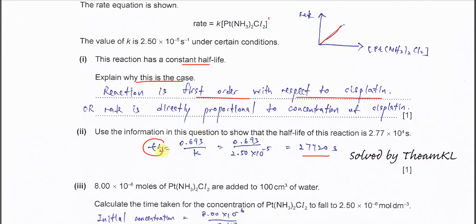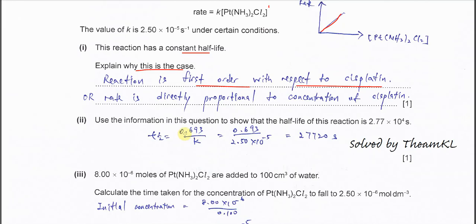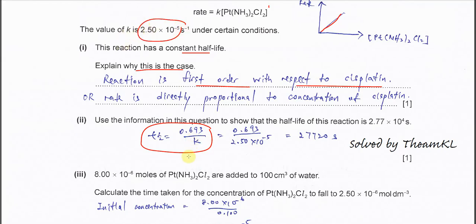Part 2: to calculate the half-life when the reactant is first order, use the expression: t½ = 0.693 / K. The value 0.693 is fixed. Substituting the K constant (2.5 × 10⁻⁵) gives a half-life of 27,720 seconds. This means the concentration of cisplatin takes 27,720 seconds to reduce by half.